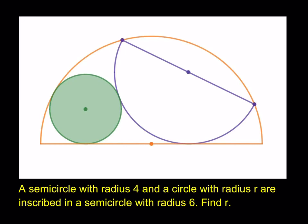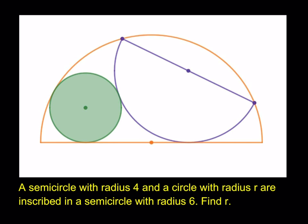Hello everyone, in this video we're going to be solving an awesome geometry puzzle. A semicircle with radius 4 and a circle with radius r are inscribed in a semicircle with radius 6, and we're supposed to find r, which is the radius of the green circle.